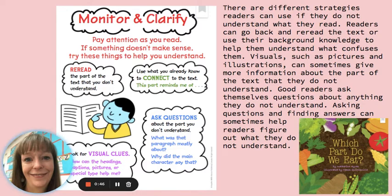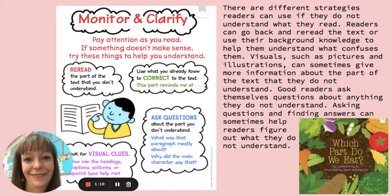Look for visual cues — how can the headings, captions, pictures, or special type help me? There are different strategies readers can use if they do not understand what they read. Readers can go back and reread the text, or use their background knowledge to help them understand. Visuals such as pictures and illustrations can sometimes give more information about the part of the text they do not understand. Good readers ask themselves questions about anything they don't understand.